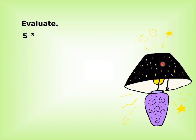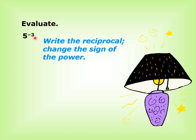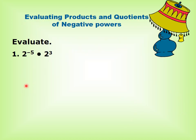Remember: the reciprocal of a number is 1 divided by that number. To evaluate 5 power negative 3, write the reciprocal and change the sign of the power: 1 over 5 power 3 equals 1 over 5 multiplied by itself 3 times, equals 1 over 125.